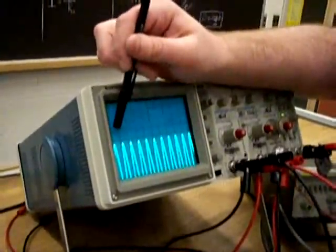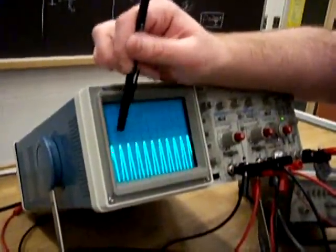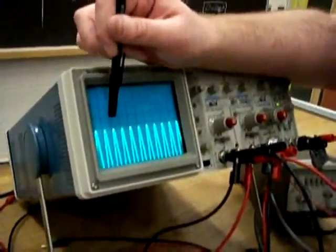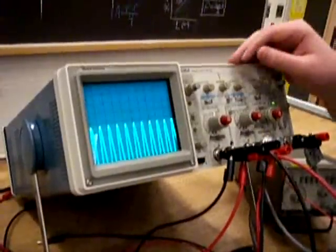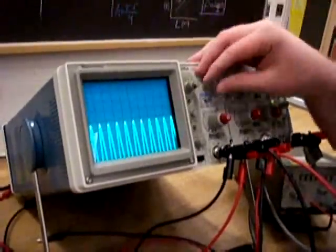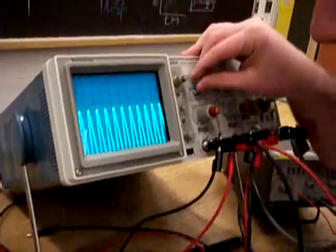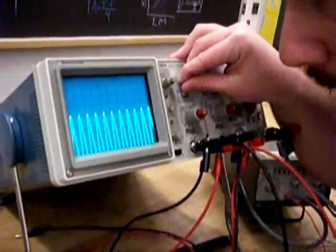So right here is 0.2, 0.4, 0.6, 0.8, 1 box, 1.2, 1.4, 1.6, 1.8, 2 boxes, and so on. And that helps us get more precise measurements. So I'm going to position that right on there.